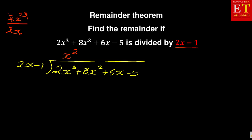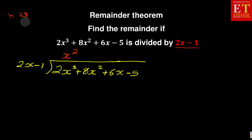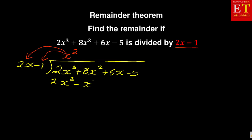After that, you are going to multiply x squared by 2x minus 1. The x squared will multiply 2x and the x squared will multiply 1. So what I'm going to have, we're going to have 2x cubed minus x squared.